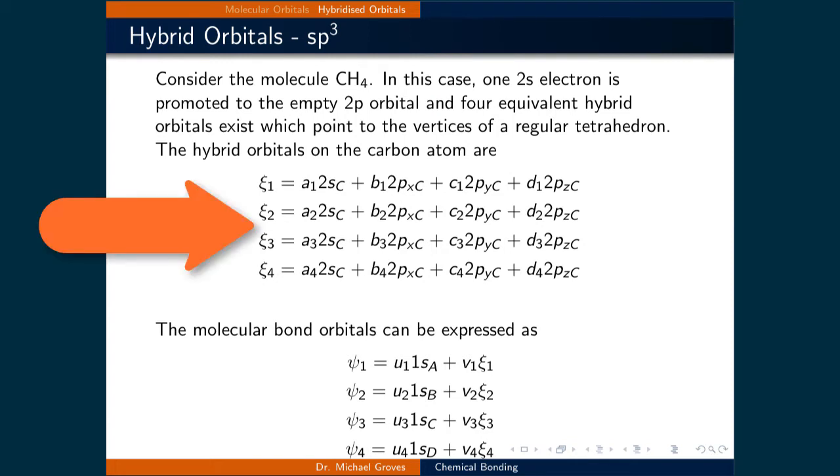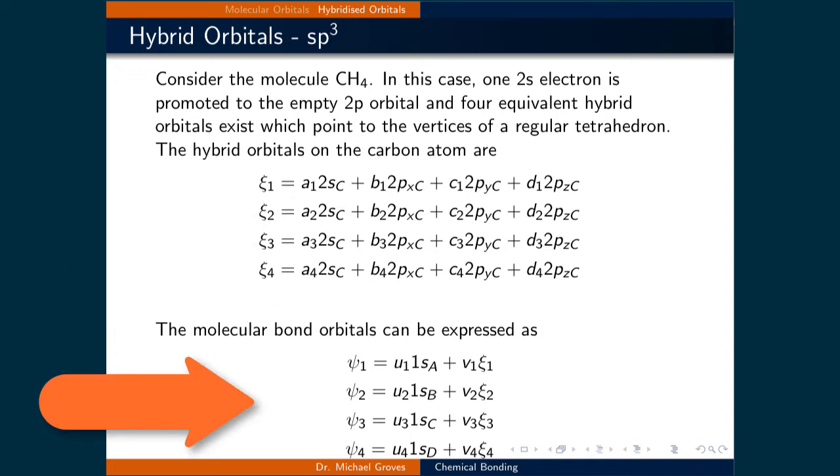The four hybridized orbitals are written as a linear combination of 2s, 2px, 2py, and 2pz, where the coefficients in front of each atomic orbital will tell us how much of each atomic orbital is in each hybridized one. We can then express the bonding molecular orbitals as a linear combination of the 1s orbital on each hydrogen with one of the four sp3 hybridized orbitals.